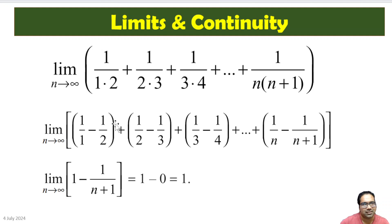Now, if you look at this, what does this mean? All these things will get cancelled: -1/2 + 1/2, -1/3 + 1/3, -1/4 + 1/4, etc.